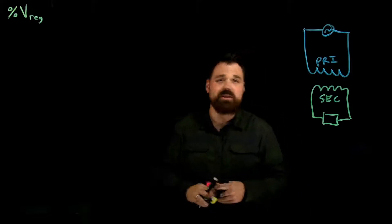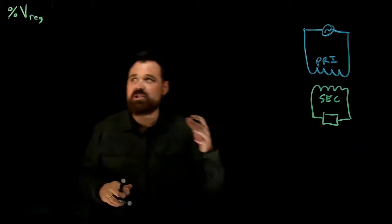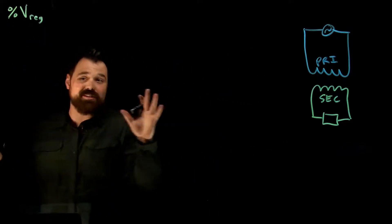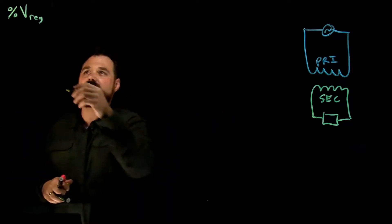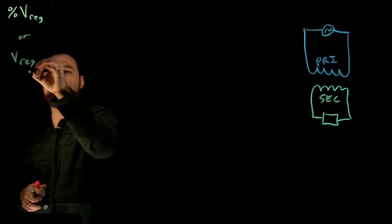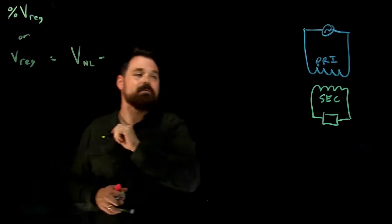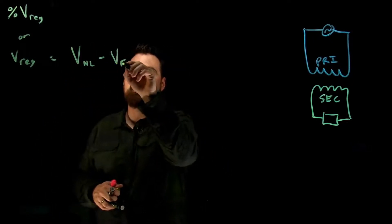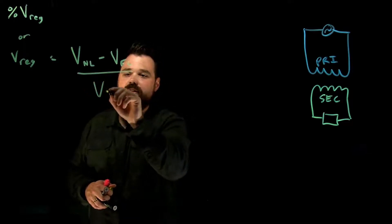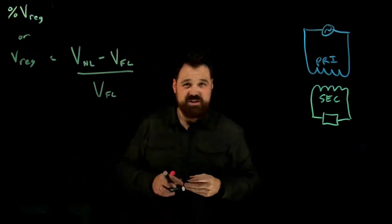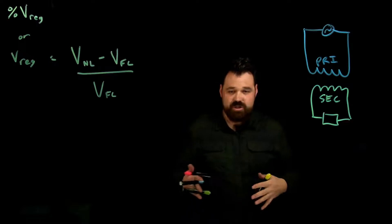So what our formula looks like is we have our percent voltage regulation, or V-reg voltage regulation. It equals the volts no load minus the volts full load over volts full load, which is a similar concept to speed regulation on a motor.